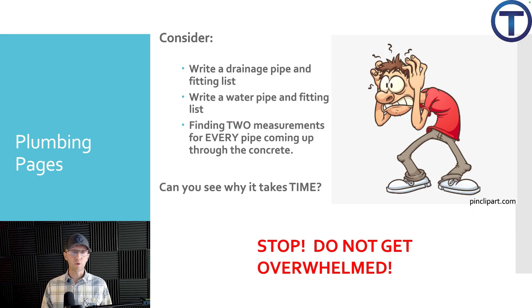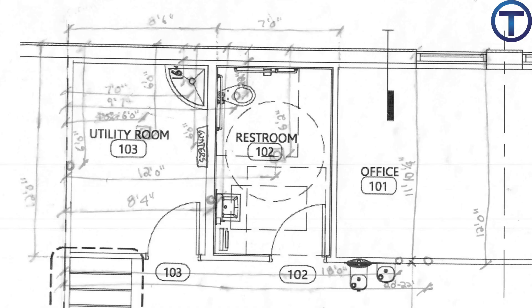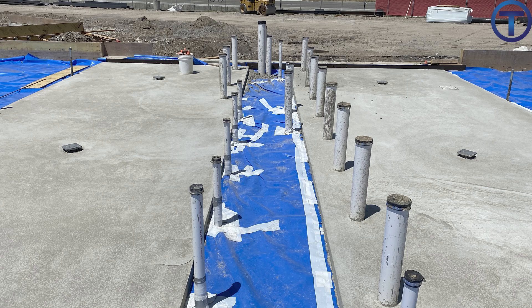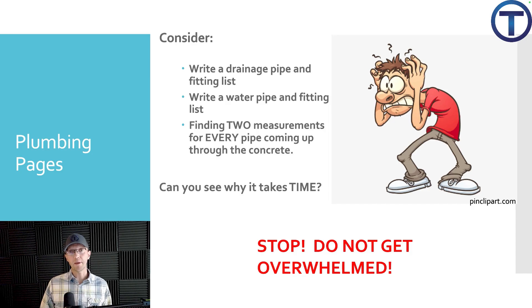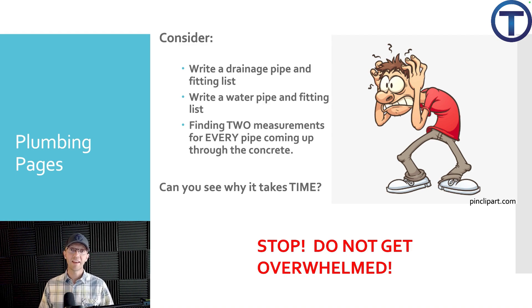For the underground, I have to come up with measurements for every single pipe that penetrates up through that concrete — at least two measurements so those pipes come up in the walls where I need them. That's for every single pipe. What if there are hundreds of pipes? That means hundreds of measurements, each individual, for toilets, labs, tubs, drinking fountains. There's a lot to work through on a big commercial job, and it can be overwhelming.